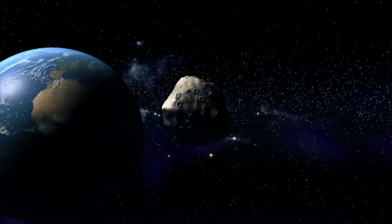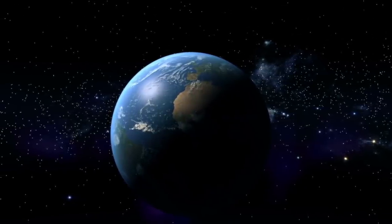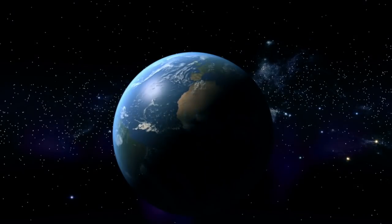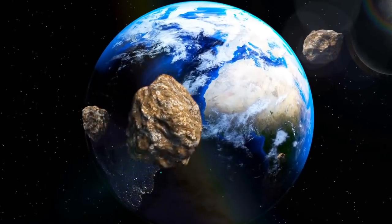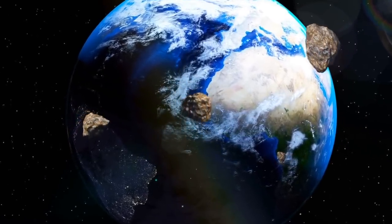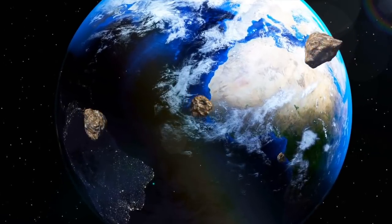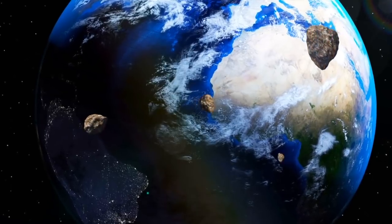Potentially hazardous asteroids are currently defined based on parameters that measure the asteroid's potential to make threatening close approaches to the Earth. NASA went on to say that their research showed them that the asteroid in question is over 3,200 feet in diameter, and that if it were to make contact with our planet, it could potentially set off a chain of events, including that of setting off supervolcanoes.